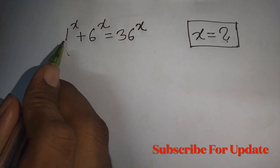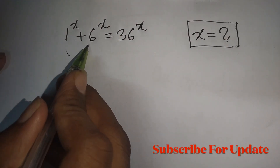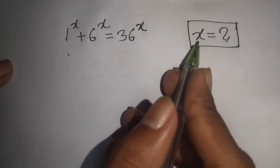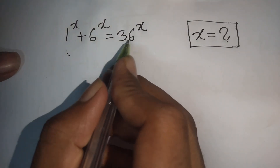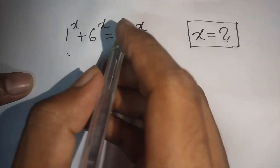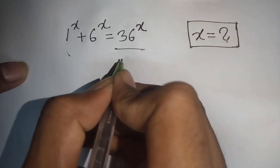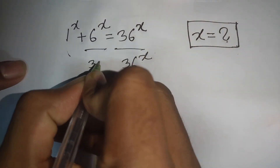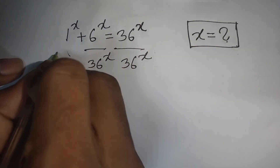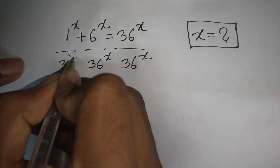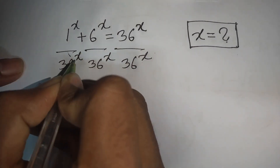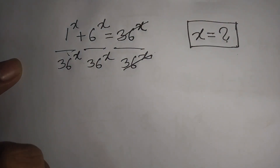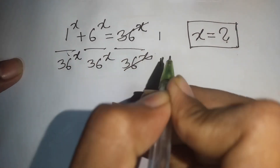How to solve 1^x plus 6^x is equal to 36^x — find the value of x. First, we divide both sides by 36^x, so divided by 36^x on both sides. This term will be cancelled, giving 1 on the right side.